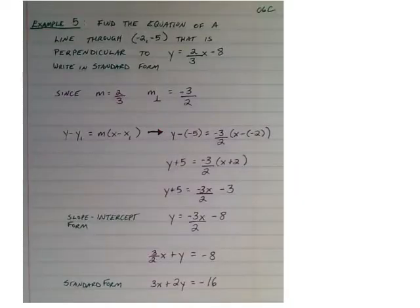Alright, in our final example, we work through a more challenging problem. It says find the equation of a line through (-2, -5) that is perpendicular to y equals 2 thirds x minus 8 and write it in standard form. Since our line 1 has an equation with a slope of 2 thirds, we could say that the perpendicular slope is negative 3 halves.